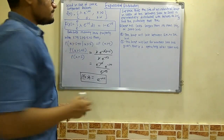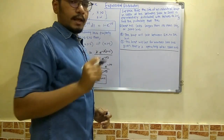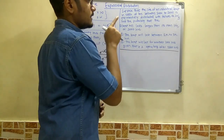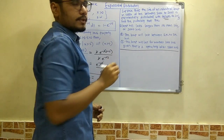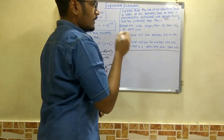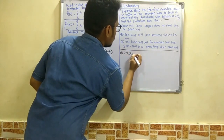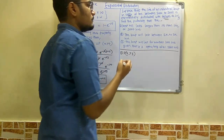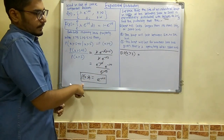Moving on to the problem: suppose the life of an industrial lamp in thousands of hours is exponentially distributed with failure rate λ = 1/3. It is clearly mentioned as a failure, confirming it is exponential distribution. We have λ = 1/3 and must find: first, the probability that the lamp will last longer than its mean life of 3000 hours, i.e., P(X > 3), dividing all values by 1000.